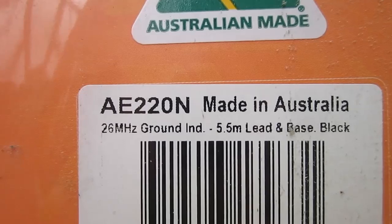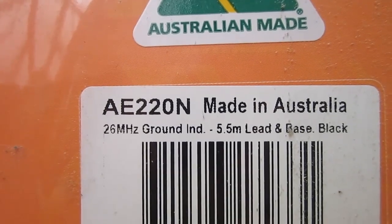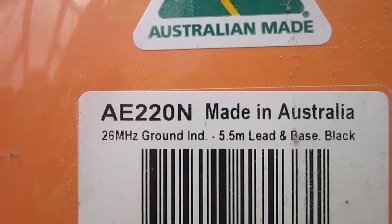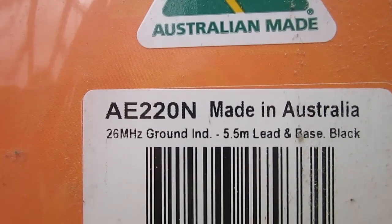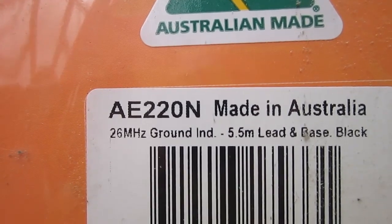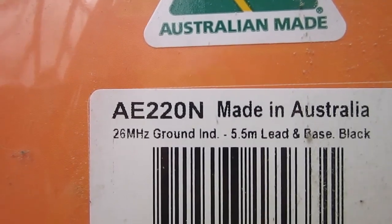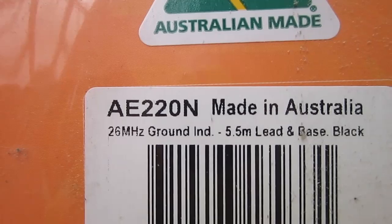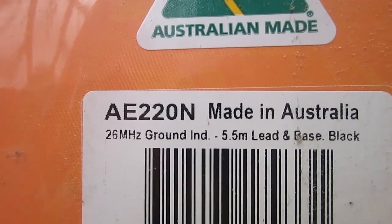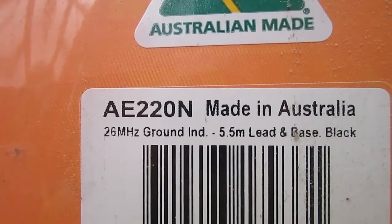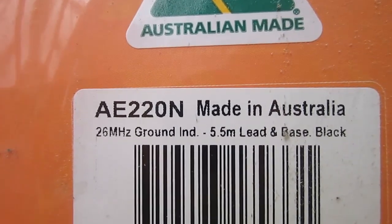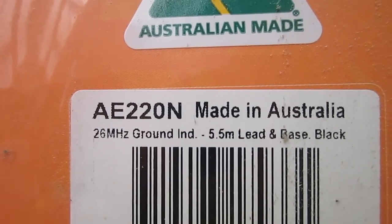This particular antenna is an AE220N. As you can see from the label, it's 26 megahertz, ground independent, and it comes complete with a 5.5 meter lead and base, and it's colored black. So this is a ground independent antenna. It does not require a ground plane. Now this antenna is in approximately the $150 price bracket.